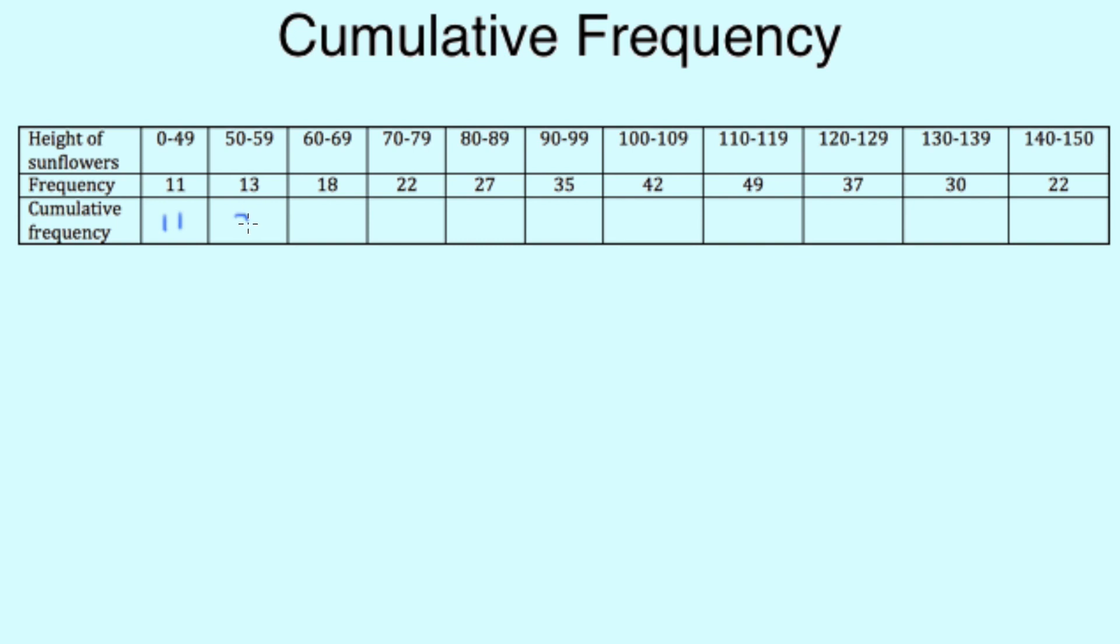So 11 from before plus the 13 above in the 50 to 59 range, which makes 24. And then we have 24 from before plus 18 above it, which is 42. Then 42 plus 22, which makes 64, and so on until our row is complete with our cumulative frequencies.